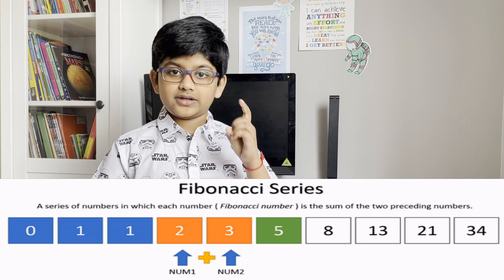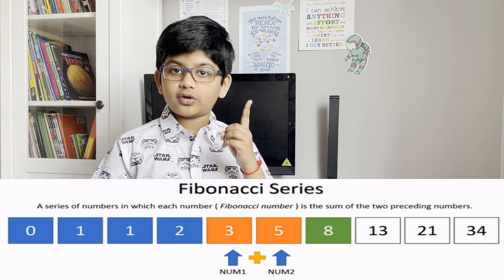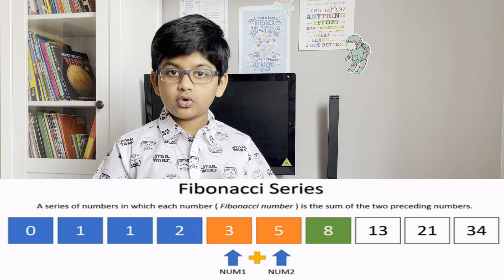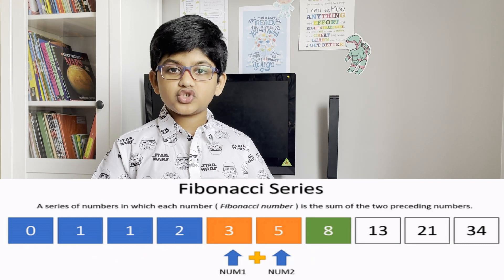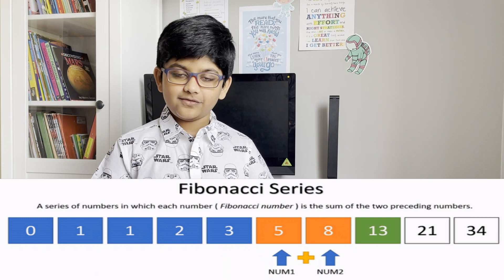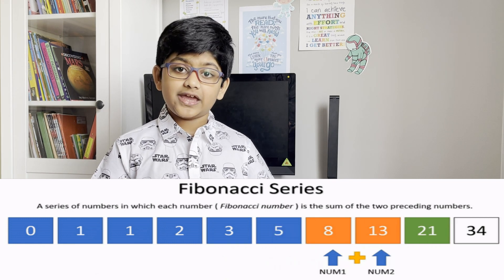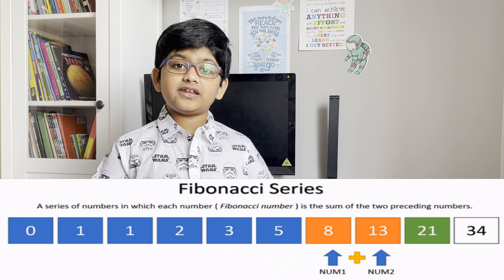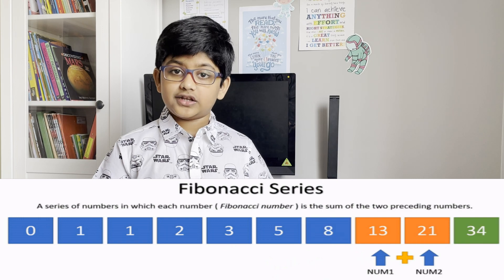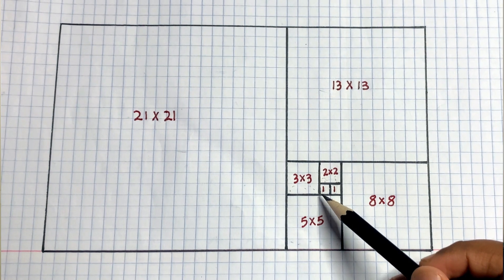0 plus 1 is 1, 1 plus 1 is 2, 1 plus 2 is 3, 2 plus 3 is 5, 3 plus 5 is 8 — and it goes on forever.